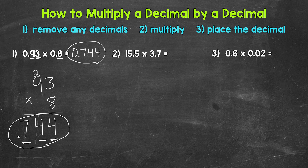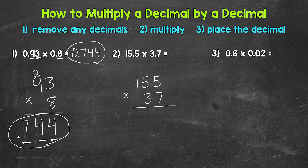Let's move on to number 2, where we have 15 and 5 tenths times 3 and 7 tenths. Let's remove any decimals and set this up. So we have 155 times 37. Now we multiply. 7 times 5 is 35. 7 times 5 is 35, plus that 3 is 38. And then 7 times 1 is 7, plus 3 is 10.